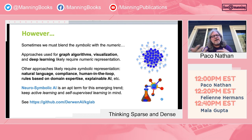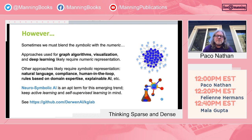Dense is important. However, sometimes we have to blend the symbolic and the numeric. When working with graph algorithms or deep learning, we typically require numeric representation, but other times we have to work on the symbolic, sparse side — for compliance audits, rules based on domain expertise, explainable AI, human-in-the-loop work, or natural language. There's a term emerging called Neurosymbolic AI; I've linked to an excellent paper by Neil Thompson at MIT. Also keep in mind active learning and self-supervised learning, which really play into this. I'm one of the committers on a project called KG Lab where we explore these ideas in more detail.